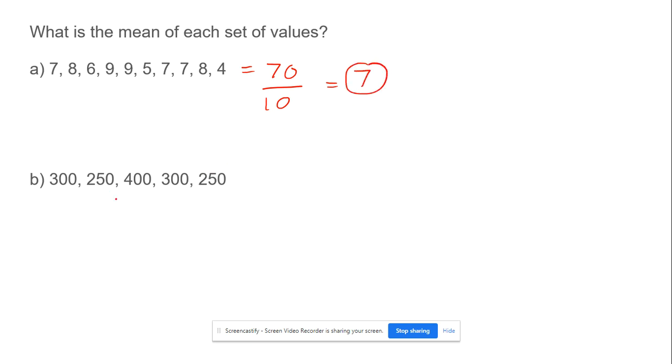For another example, adding up 300, 400, 250, 250, and 300 gives us 1500. Divided by 5 numbers equals an average of 300.